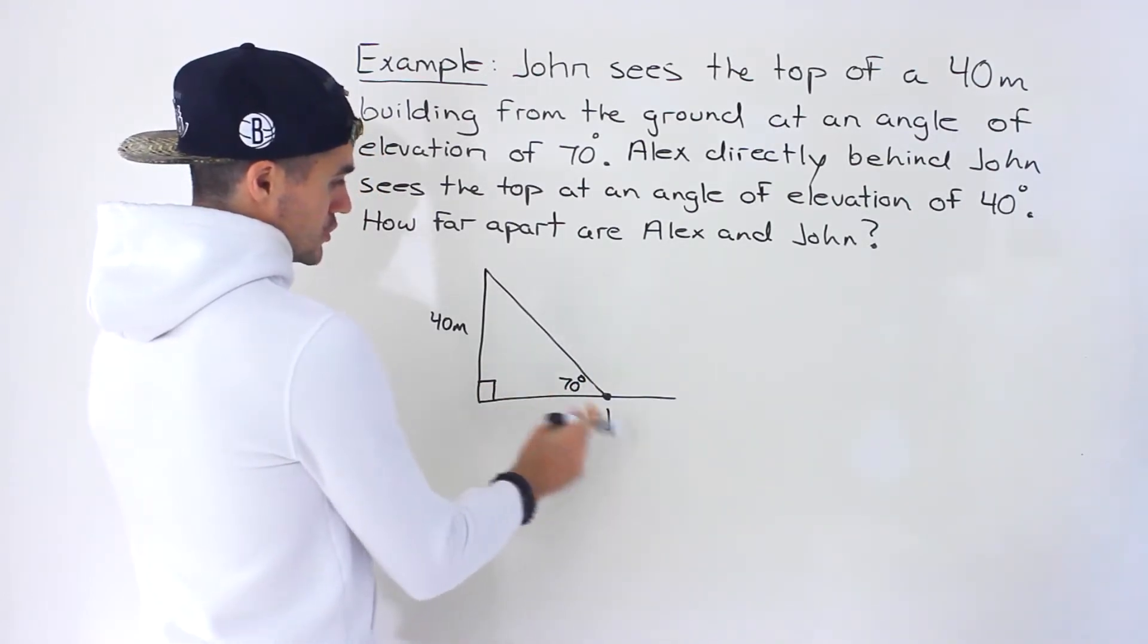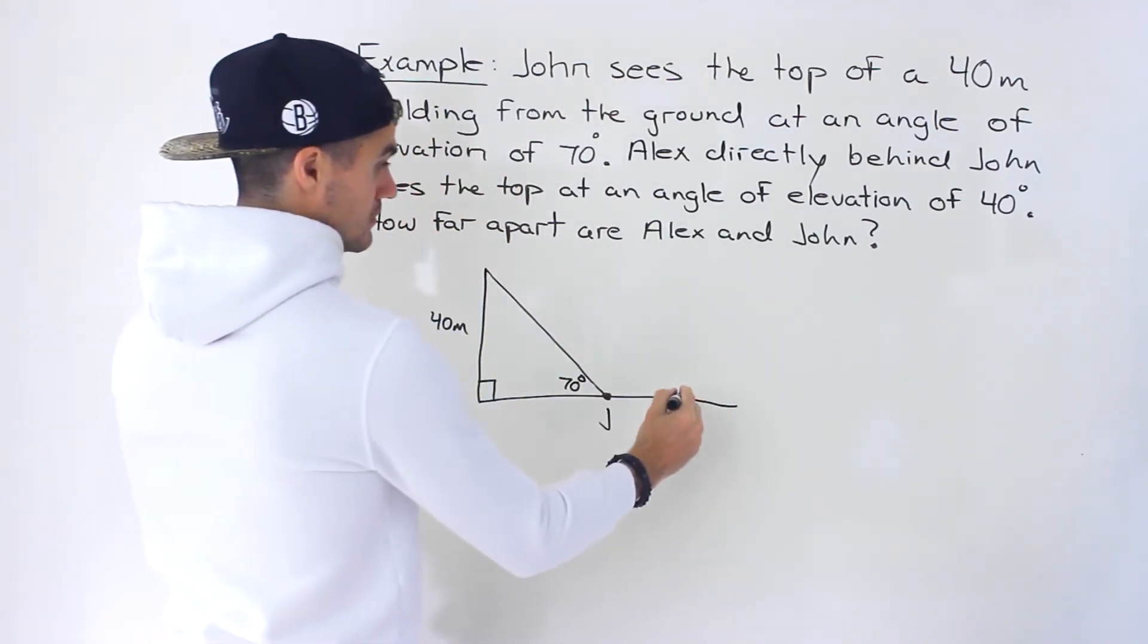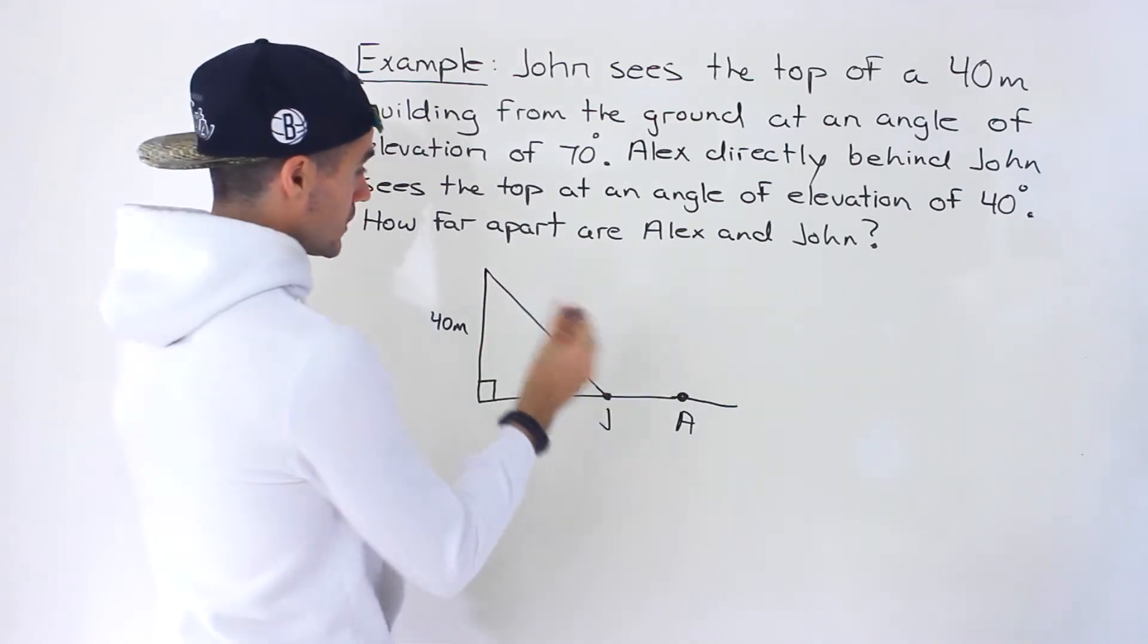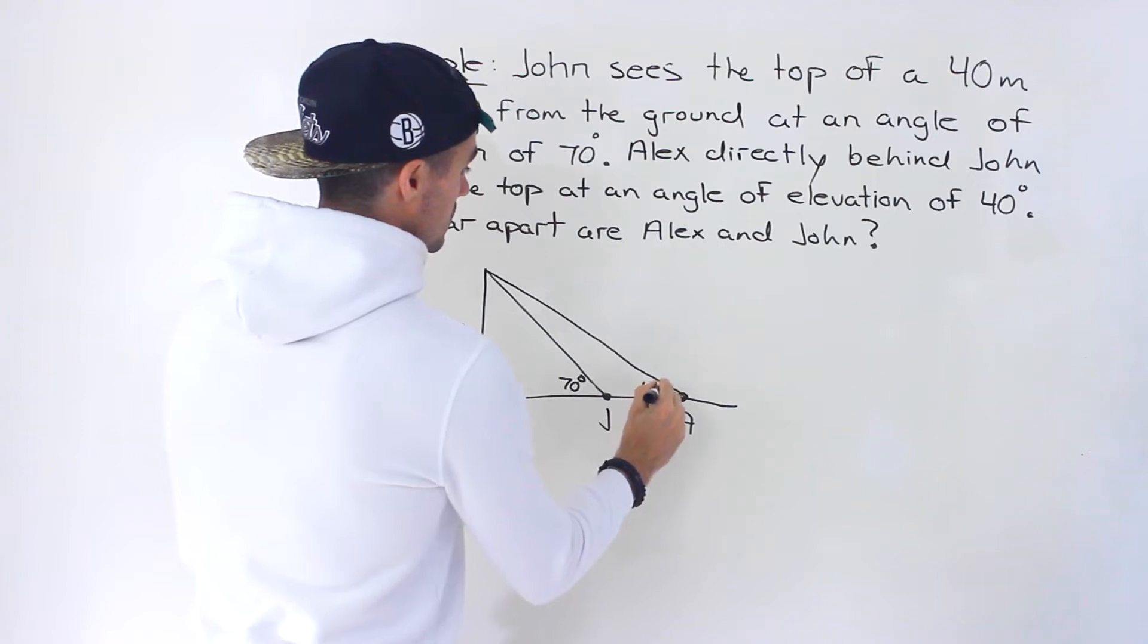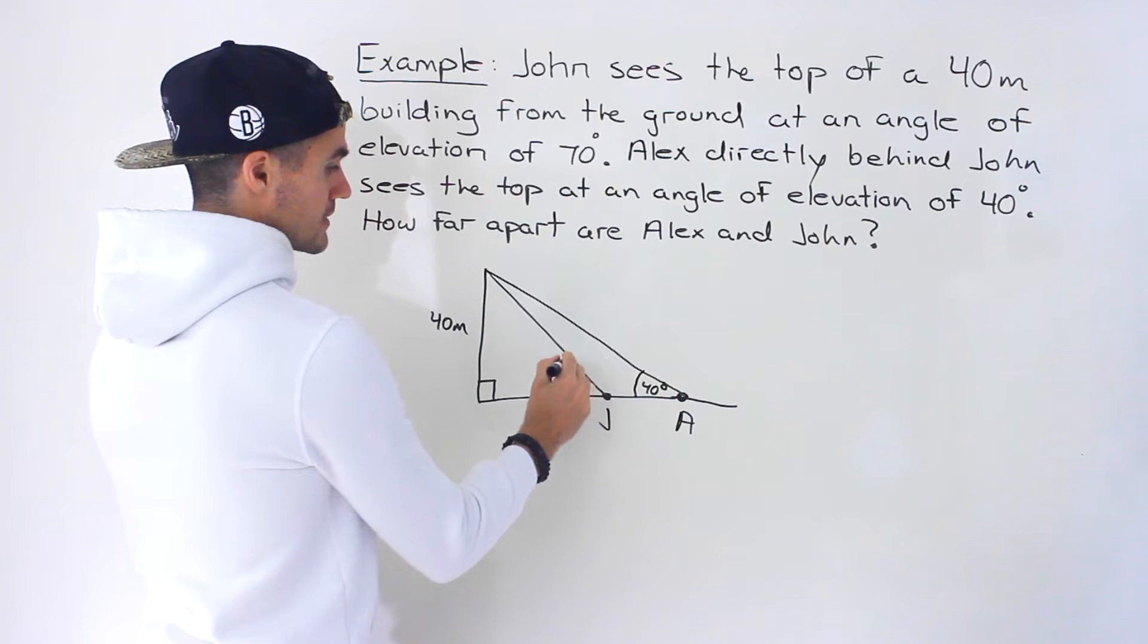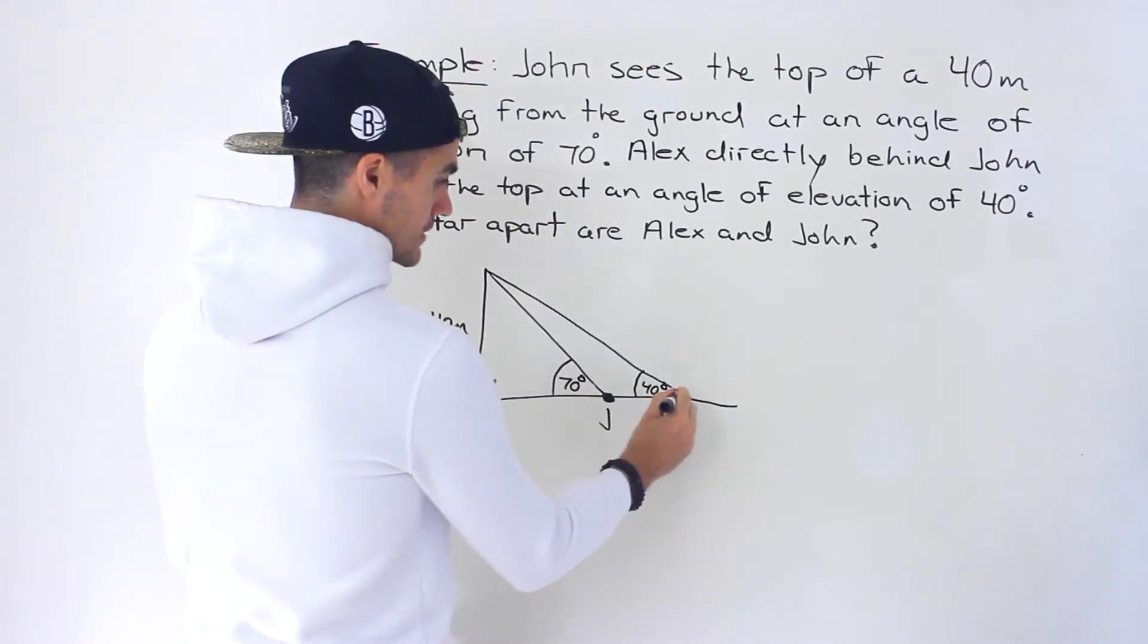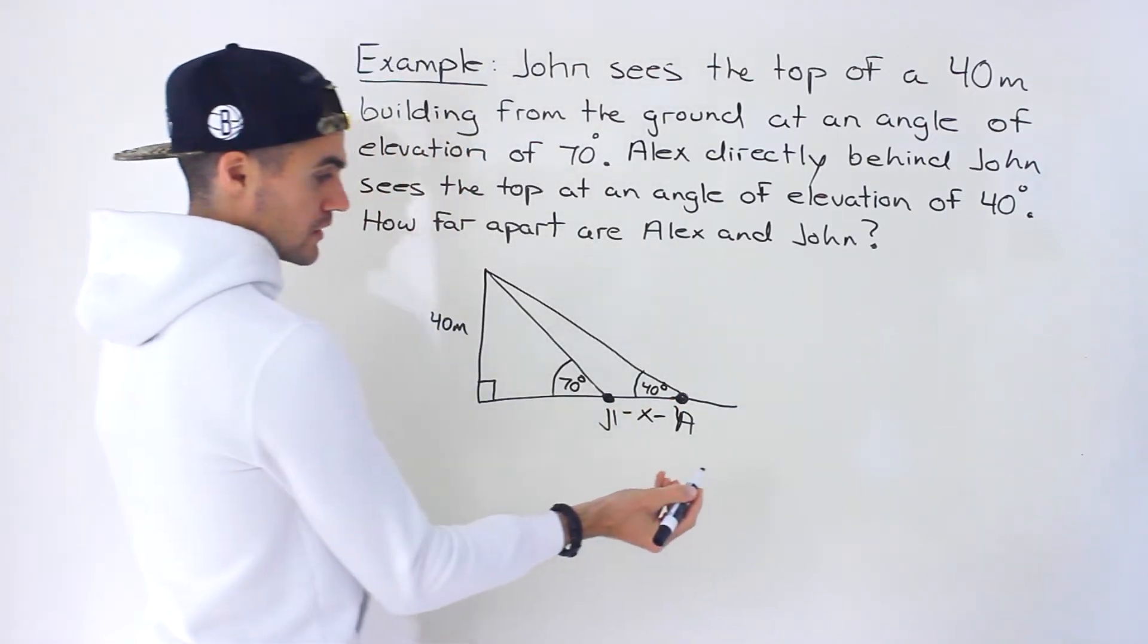Okay, so John is there and then we're told that Alex, who's directly behind John, so let's say over here, this is where Alex is, sees the same top of the building at an angle of elevation of 40 degrees. So drawing this here, this here would be 40 degrees like that. That's the angle of elevation for Alex. That's the angle of elevation for John. And what they're asking is how far apart are John and Alex? So they're basically asking for this distance right here between them. We could call that X.